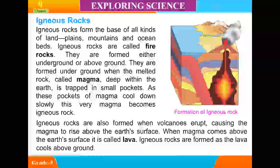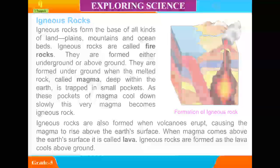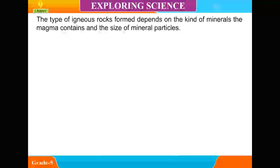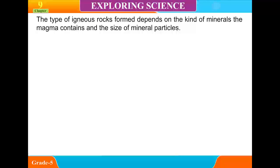Igneous rocks are also formed when volcanoes erupt, causing the magma to rise above the earth's surface. When magma comes above the earth's surface, it is called lava. Igneous rocks are formed as the lava cools above ground. The type of igneous rocks formed depends on the kind of minerals the magma contains and the size of mineral particles.